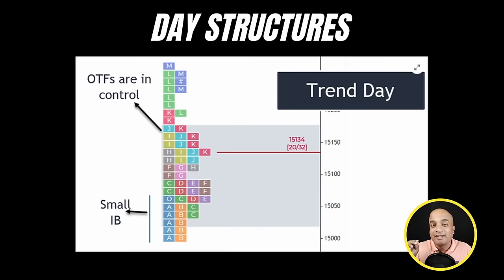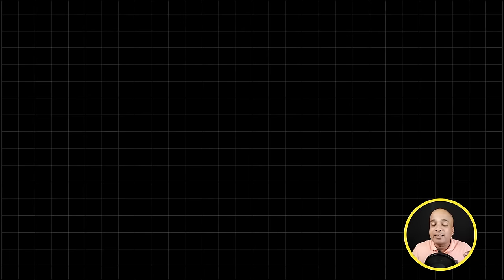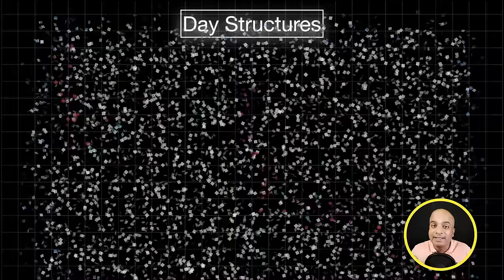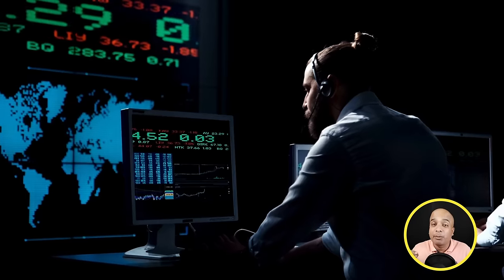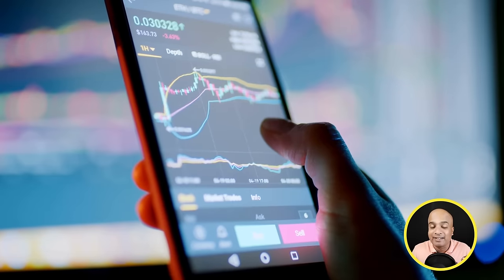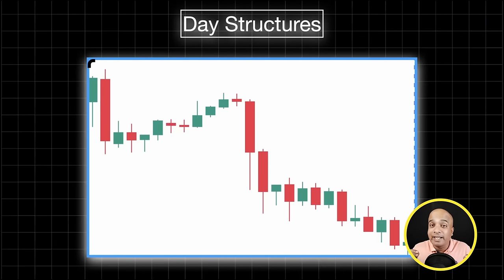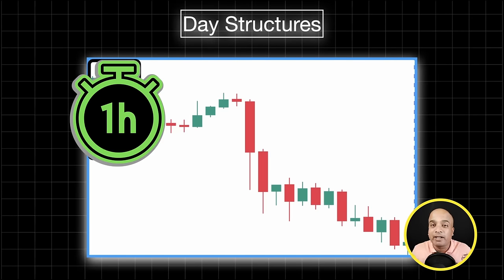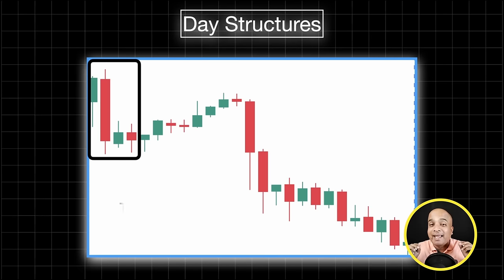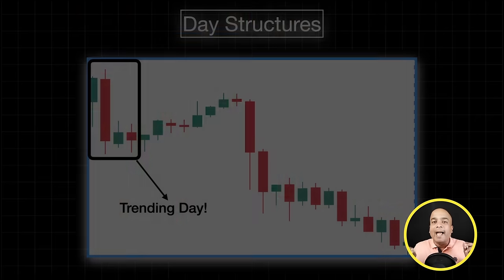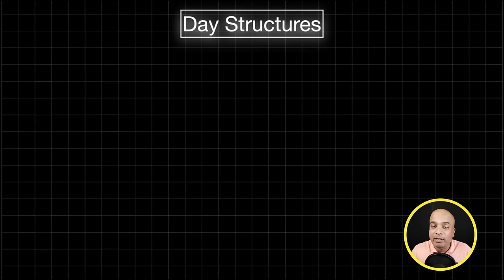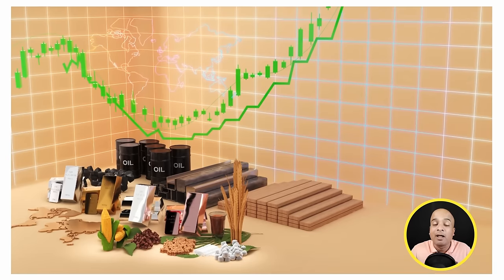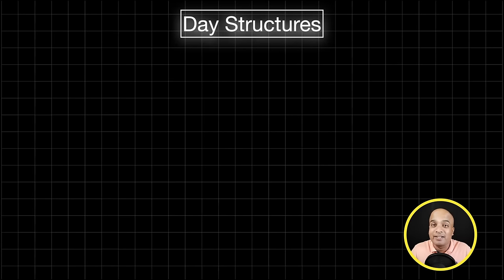The simple answer is day structures. Day structures from market profiles provide valuable insights into the price action and behavior of the market within a single trading session. By analyzing the development of the Initial Balance range — which is nothing but the first one-hour range in Indian market conditions — we can gain a deeper understanding of market dynamics and potential trading opportunities. As per market profile, in any market whether it is a cash market, commodity market, or forex market, any trading day can exhibit one of six day structures.